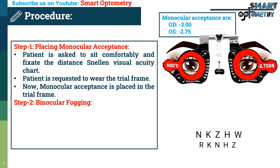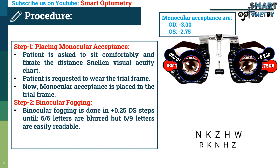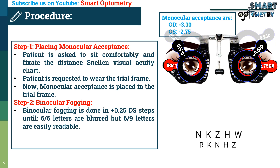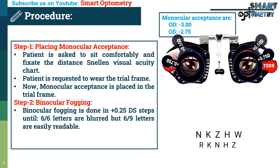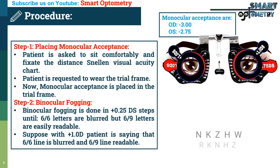Step 2 — Binocular fogging: fogging is done in plus 0.25 dioptre steps until the 6/6 letters are blurred but the 6/9 letters are easily readable. Suppose with plus 1 dioptre, the patient says the 6/6 line is blurred and the 6/9 line is readable.